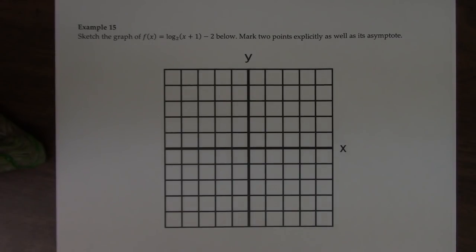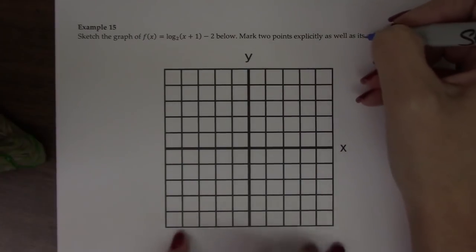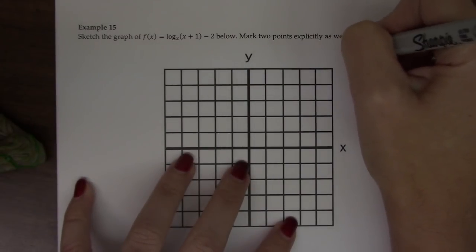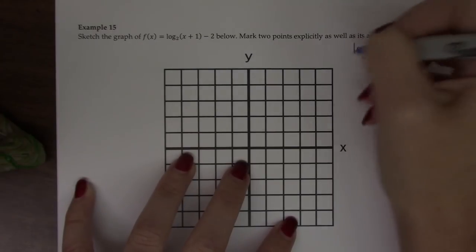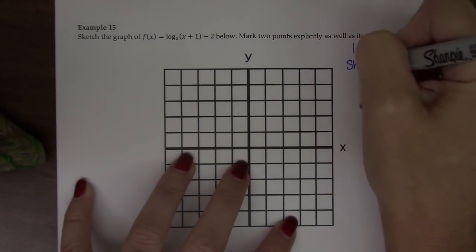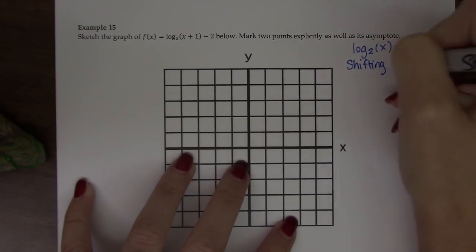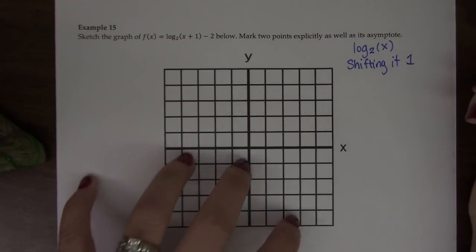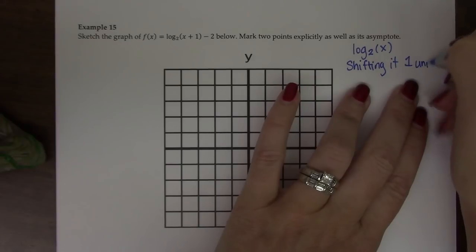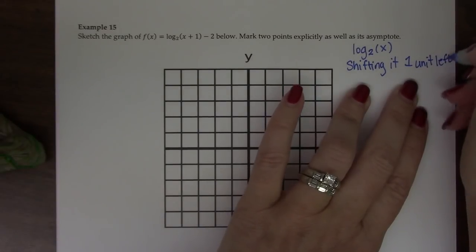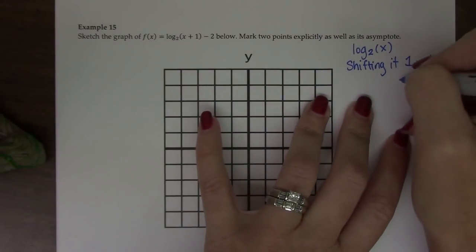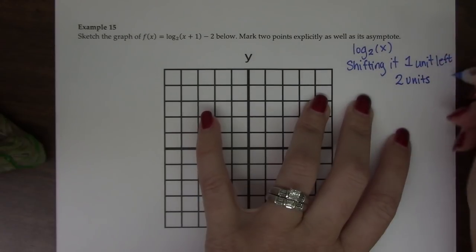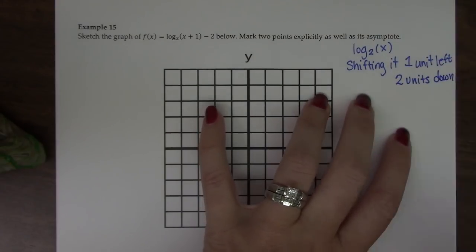And what we've done here is this graph is taking log base 2 of x and shifting it one unit left and two units down.